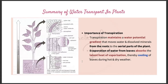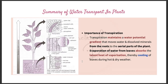Here is a summary of water transport in plants. Transpiration is important because it maintains a water potential gradient that moves water and dissolved minerals from the roots to the aerial parts of the plant. Additionally, evaporation of water from the leaves absorbs the latent heat of vaporization, thereby cooling the leaves during hot and dry weather so they do not get damaged.